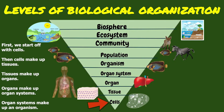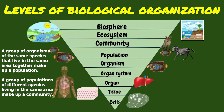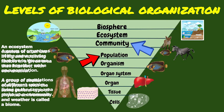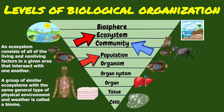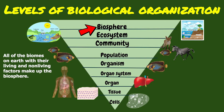So let's do a quick recap of biological levels of organization. First, we start off with cells, then cells make up tissues, then tissues make up organs, then organs make up organ systems, and organ systems make up an entire organism. A group of organisms of the same species that live in the same area make up a population. A group of populations of different species living in the same area make up a community. An ecosystem consists of all of the living and non-living factors in a given area that interact with one another. A group of similar ecosystems with the same general type of physical environment and weather is called a biome. And finally, all of the biomes on Earth with their living and non-living factors make up the biosphere, which is our entire living Earth.